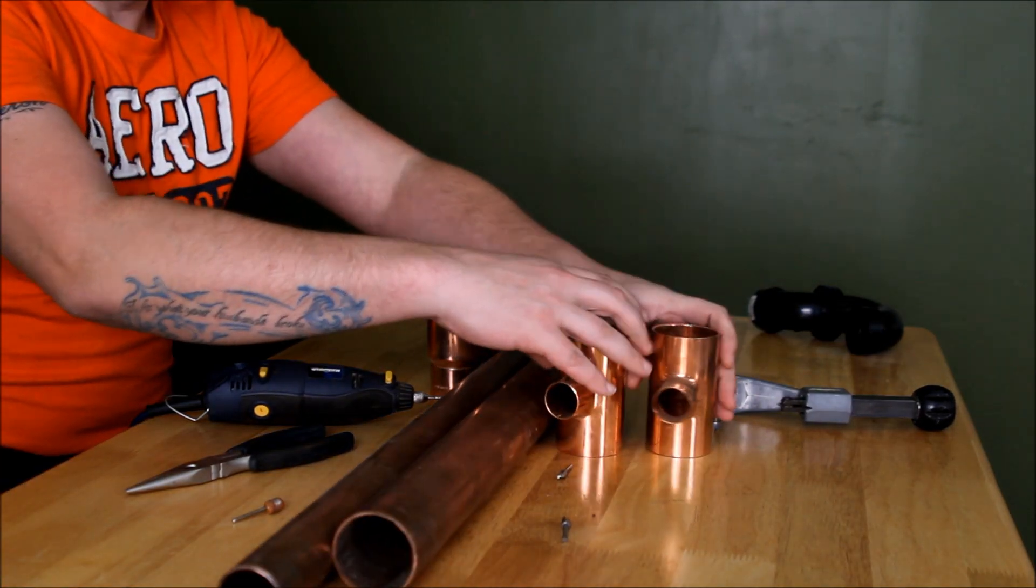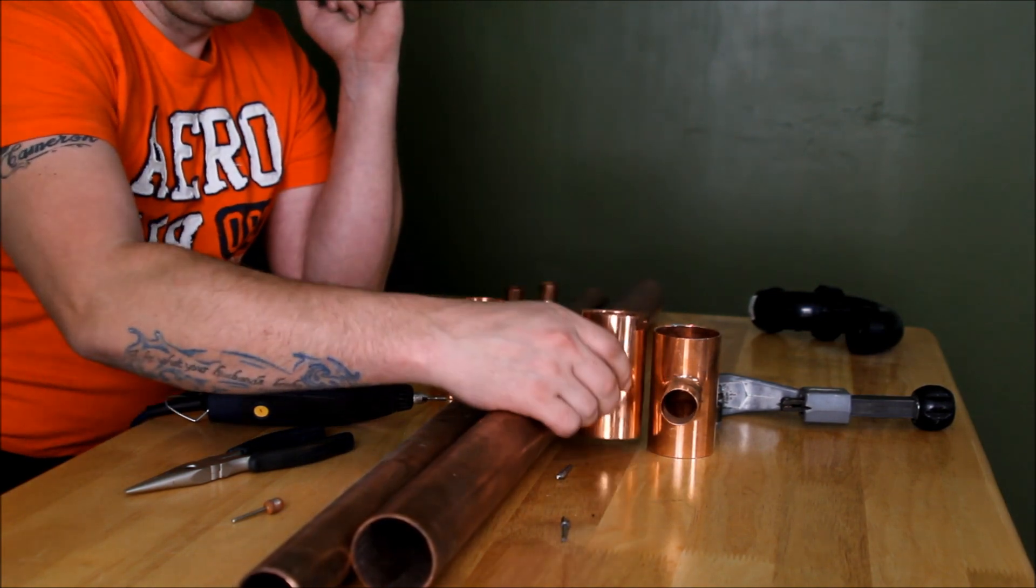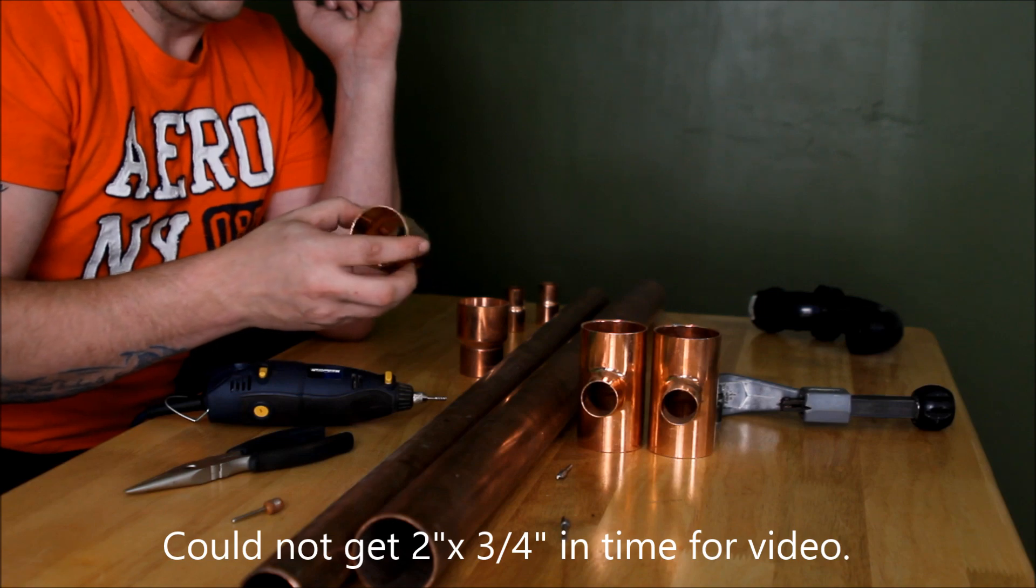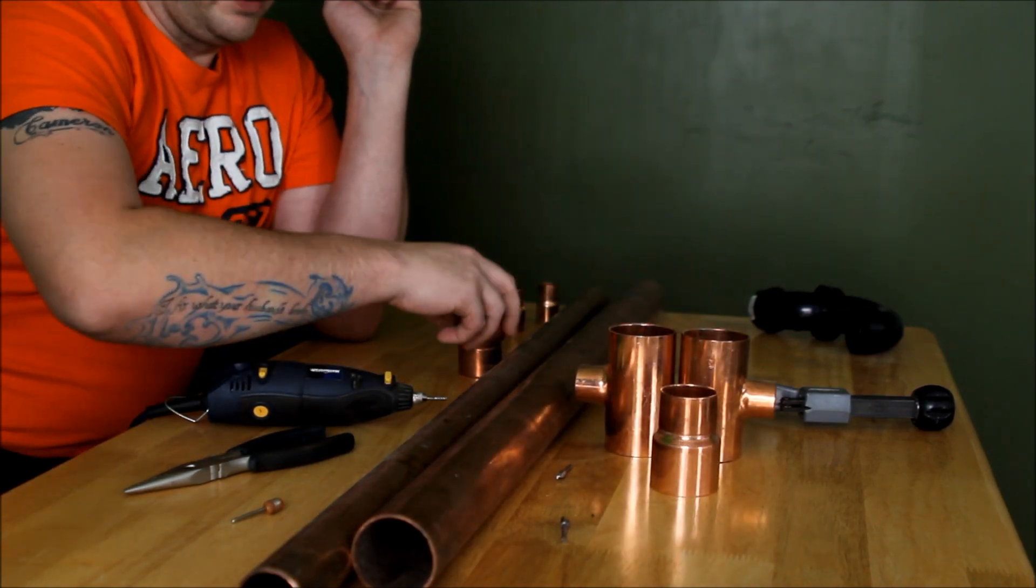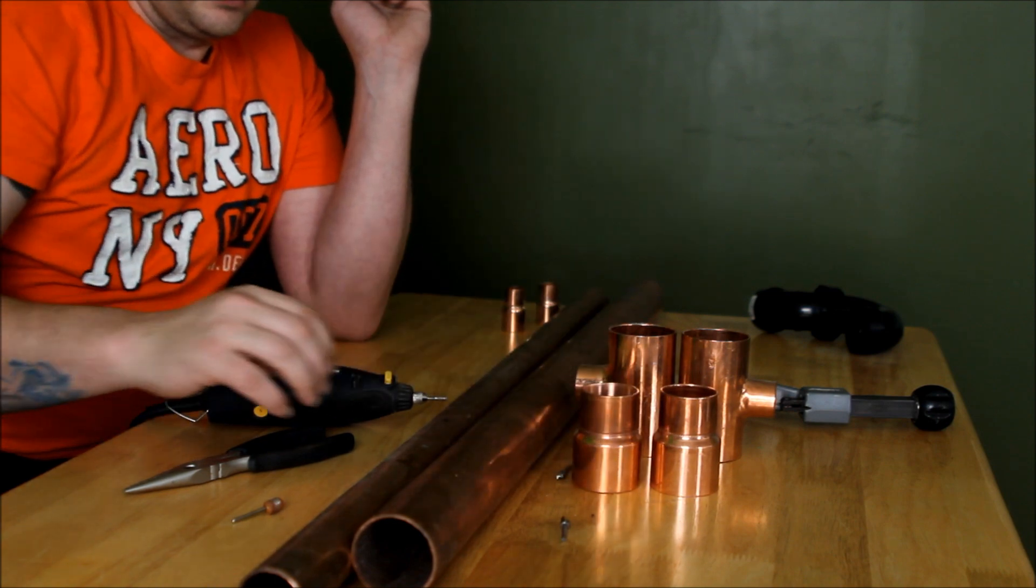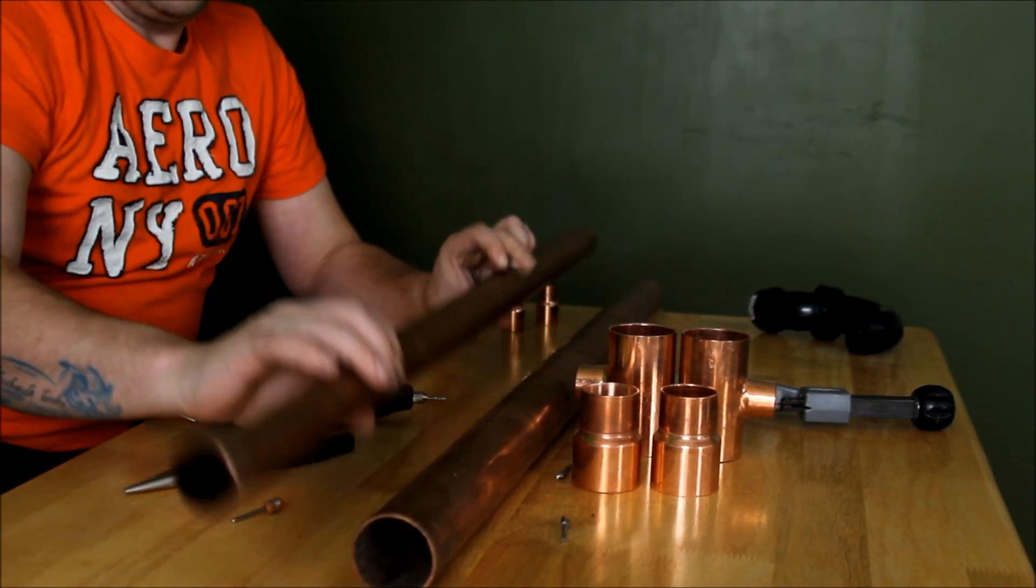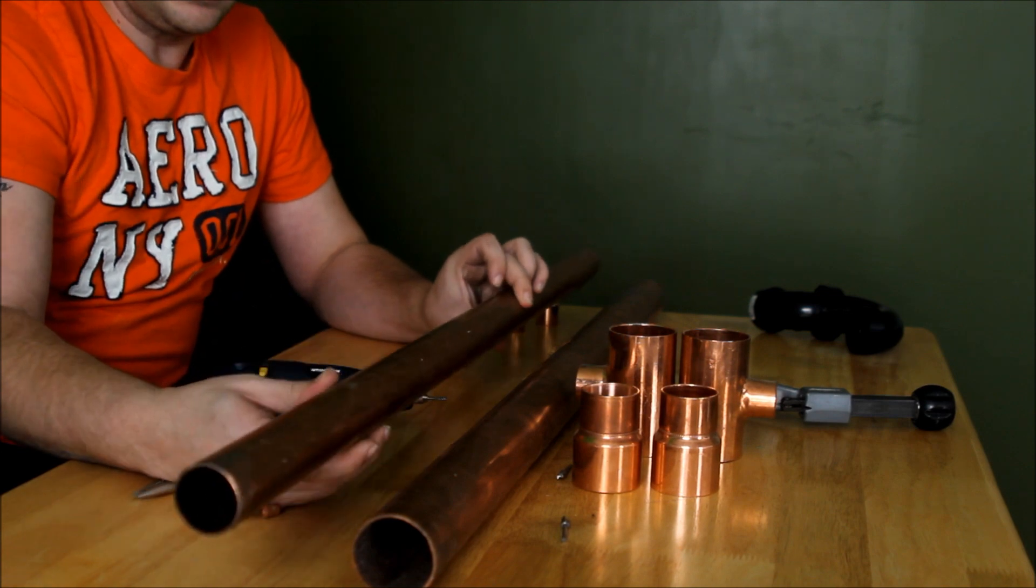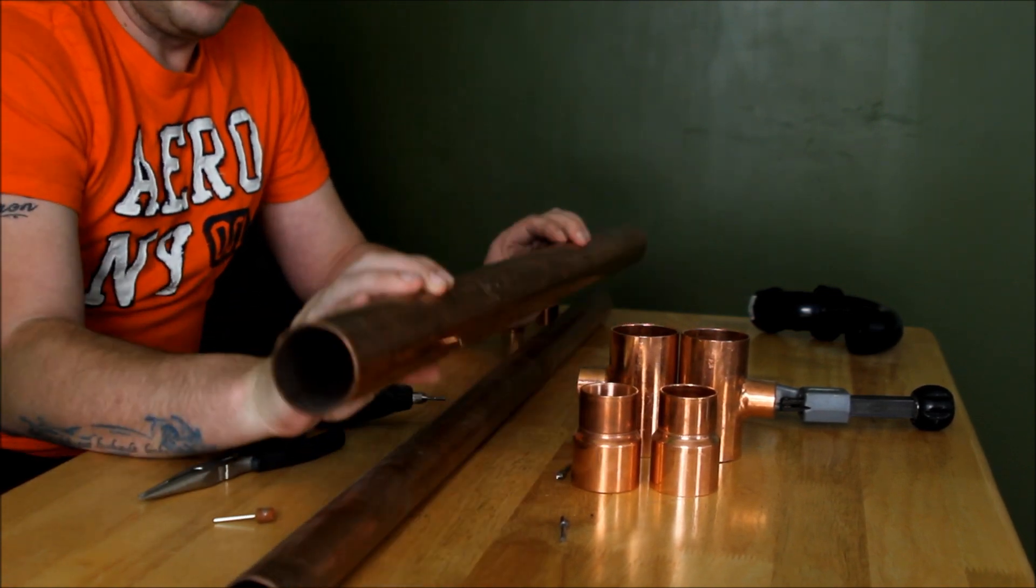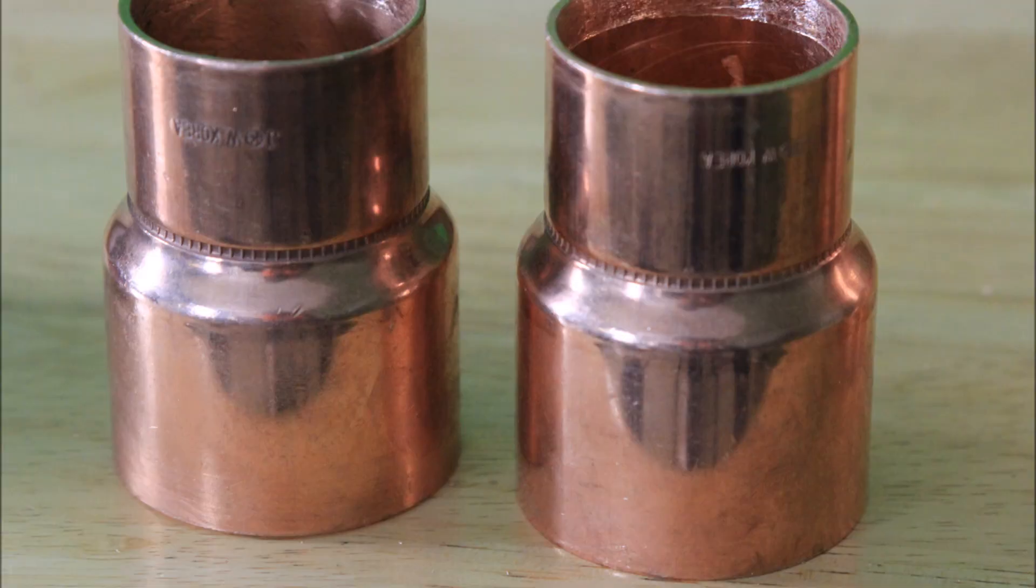What we're starting off here with is two 2-inch by 1-inch reducing tees. I've got two reducing bushings, 2-inch by inch and a half. I've got two pieces of pipe. Since we're dealing with domestic pressure, this is type M, and this is type M also. Now, see that edge stamped around the middle of the bushing? We need to remove that. We do that by using a Dremel tool.